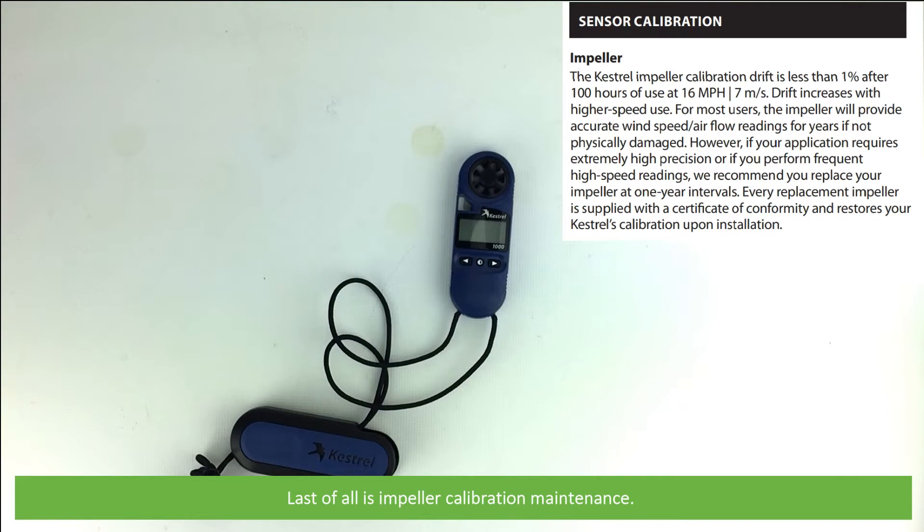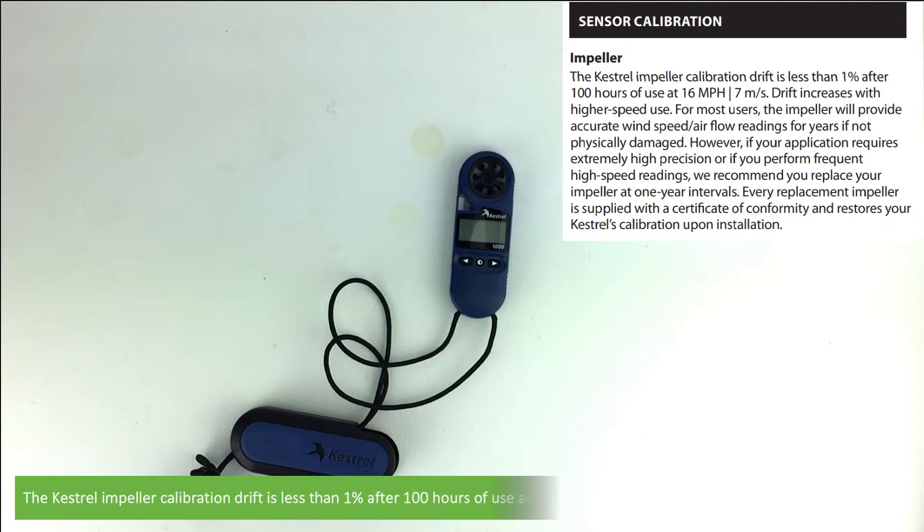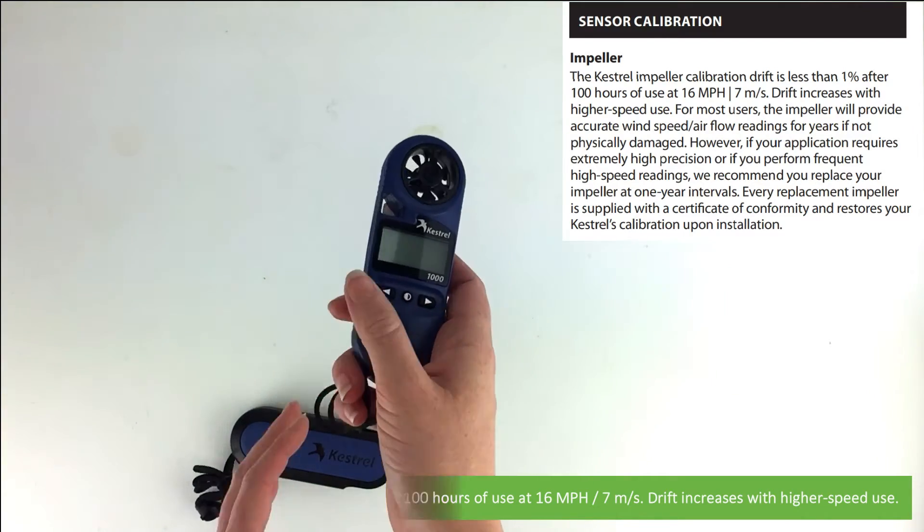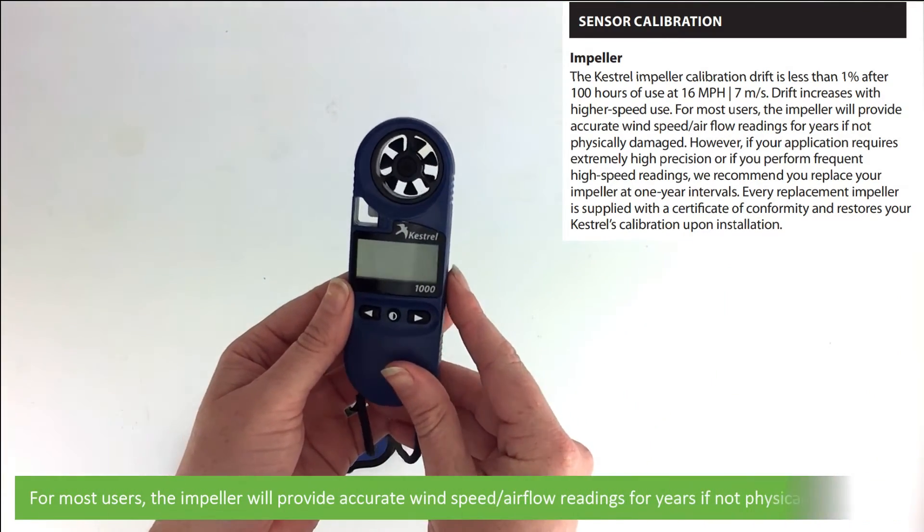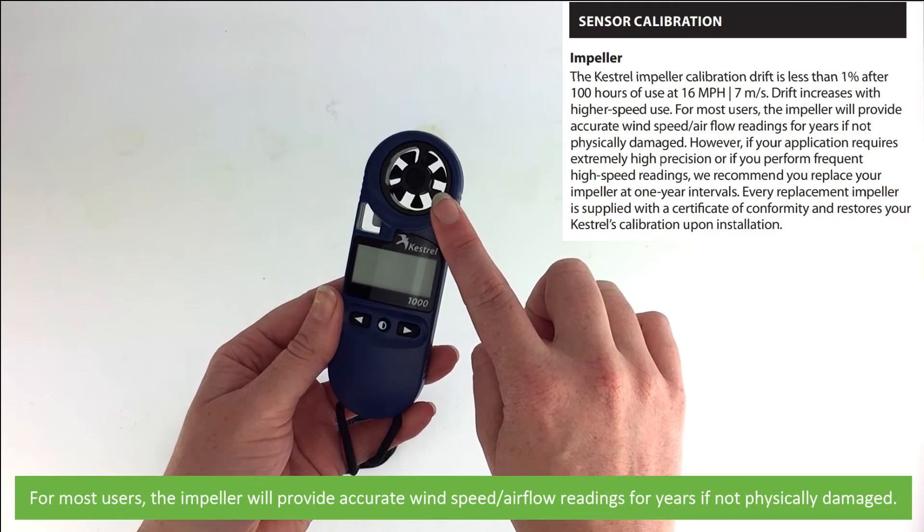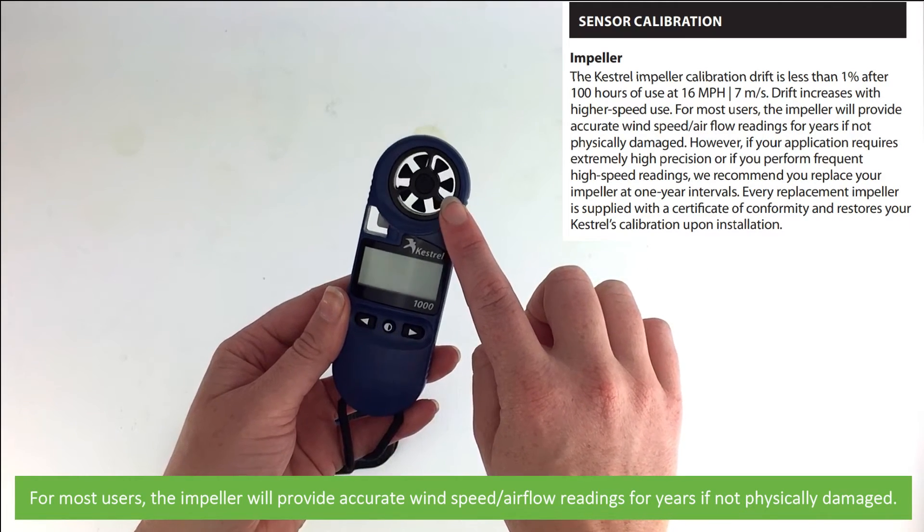Last of all is impeller calibration maintenance. The Kestrel impeller calibration drift is less than 1% after 100 hours of use at 16 miles per hour or 7 meters per second. Drift increases with higher speed use. For most users, the impeller will provide accurate wind speed and airflow readings for years if not physically damaged.